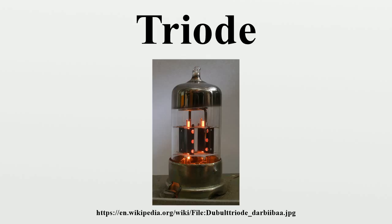The first three-element tube, a mercury-vapour-filled tube with a control grid, was patented on March 4, 1906 by the Austrian Robert von Lieben. Independently, beginning in 1906, American engineer Lee de Forest invented a number of three-element tube designs by adding an electrode to the diode, which he called audions. The audion considered the first triode, in which the grid was located between the filament and plate, was patented January 29, 1907.